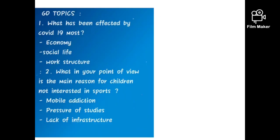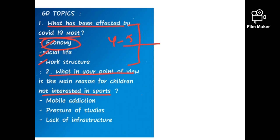In my SSB there were two topics. The first topic we chose was: 'What has been affected by COVID-19 the most - the economy, social life, or work structure?' I laid more emphasis on economy and gave 4 to 5 points. The second topic was: 'What is the main reason children are not interested in sports?' I initiated that discussion and took mobile addiction as my main point, making good points about how children avoid sports due to mobile addiction.